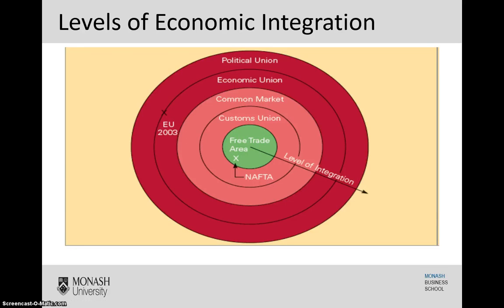In this video, we're going to have a look at the different levels of economic integration, whether it's on a regional or a global scale. As you can see by this diagram here, there are a number of different levels that we're going to look at. We're going to start with the most narrow, focused level, which is the free trade area, and then work our way out of this circle until we get to the highest level of economic integration, which is the political union. We'll give you some examples and hopefully illustrate some of the key differences here.